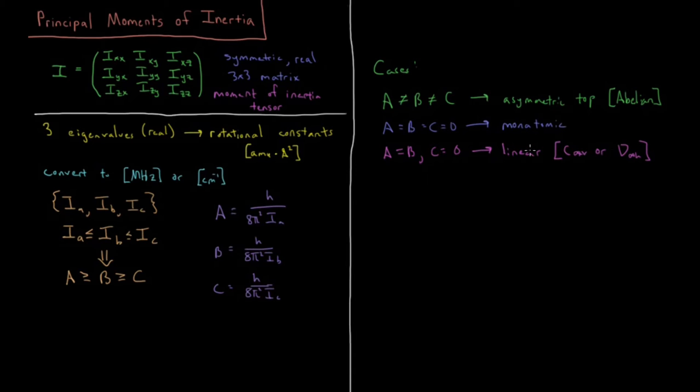That's why in rigid rotor when we study diatomic molecules, those are linear by definition, so we're using that B eigenvalue, the B rotational constant, because A and B are both the same and C is zero.